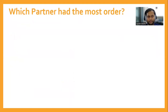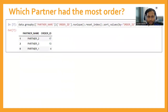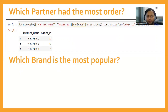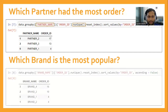Now for the next question — which partner had the most orders — we reuse the same function, just changing item name to partner name, and using nunique instead of count so we count unique order IDs. Then we reuse the same function again, changing partner name to brand name and using nunique to get the most popular brand.